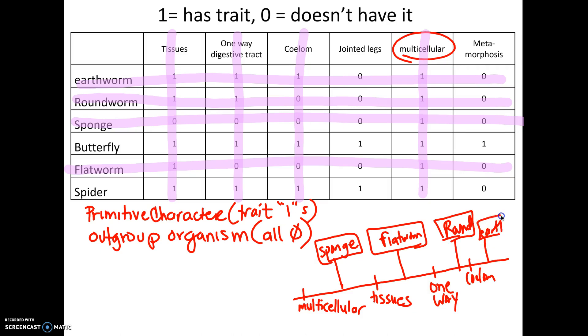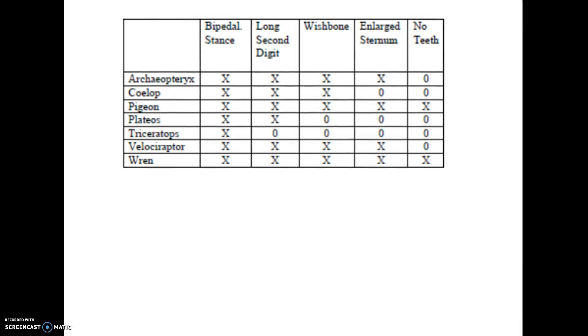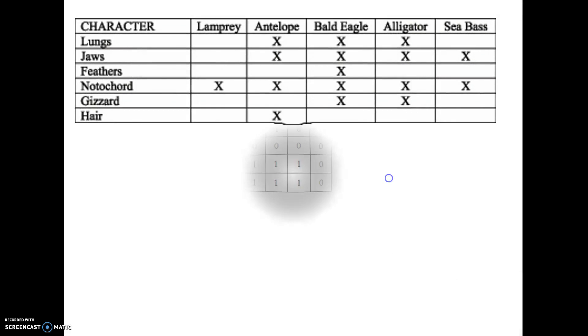Again, I'm going to run out of space. Our next trait is jointed legs here. Everybody has. So jointed legs. And then our next organism would be our spider. And then our last trait would be metamorphosis. And then our butterfly. And I want to show you this one here.